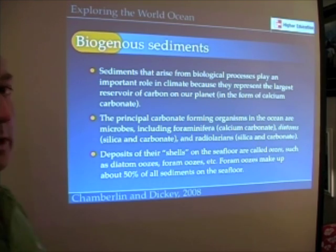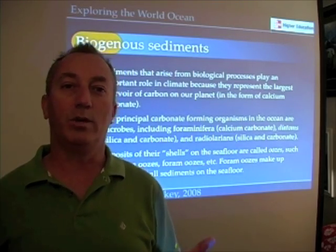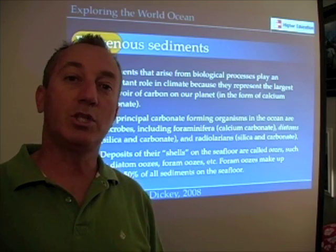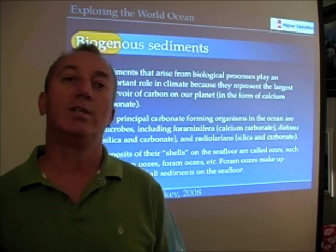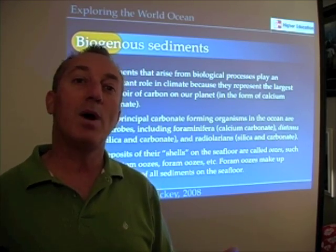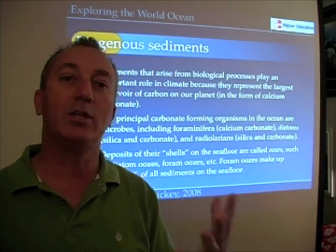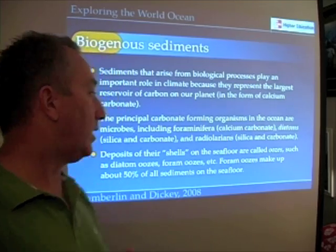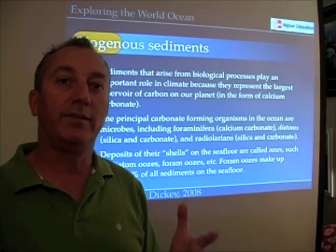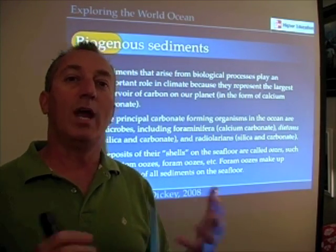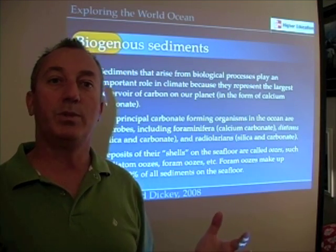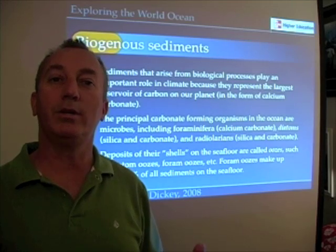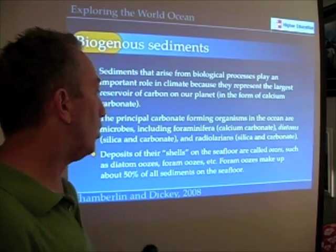The deposits of these organisms on the sea floor are called oozes — I love that word. A diatom ooze is a deposit of diatom shells; a foraminifera ooze is a deposit of foraminifera mud. Half the sediments we find on the sea floor — and over half the seafloor is essentially abyssal plains — are made up of these oozes. So there's a lot of biological material at the bottom of the ocean, and that's an important storehouse for carbon.